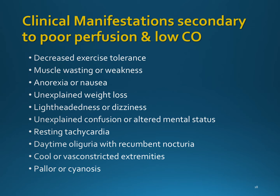Right-sided heart failure, or failure of the right ventricle, results in congestion in the peripheral tissues and the viscera. When the right ventricle fails, congestion in the viscera predominates. This occurs because the right side of the heart cannot eject blood effectively and cannot accommodate all of the blood that normally returns to it from the venous circulation. Increased venous pressure leads to jugular vein distension and increased capillary hydrostatic pressure throughout the venous system. Systemic clinical manifestations include edema of the lower extremities and sacral area, which is dependent edema.